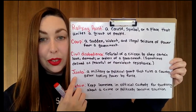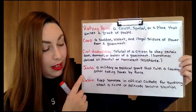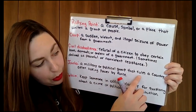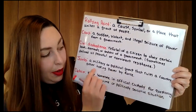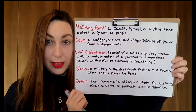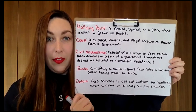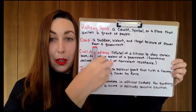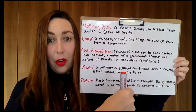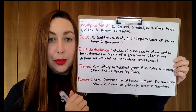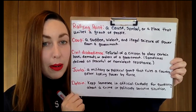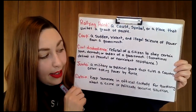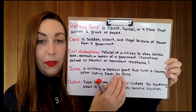Then we have the word 'junta' — a military or political group that rules a country after taking power by force. So if a coup is staged and the group of people who performed the coup take over, then we would call that a junta — a military or political group that rules a country after taking power by force.